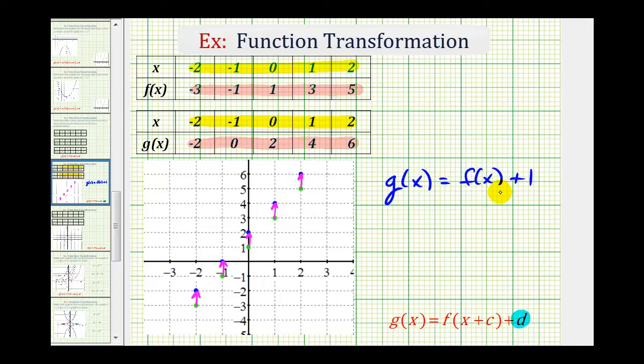And let's go ahead and test this using a value of x. So for example, if we select x equals two, this is saying that g of two must equal f of two plus one. Well, g of two is six, f of two is five, but five plus one is six, so it checks.